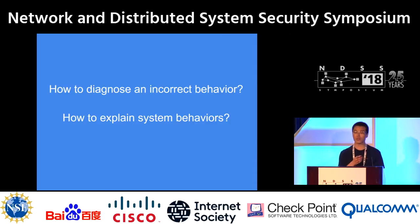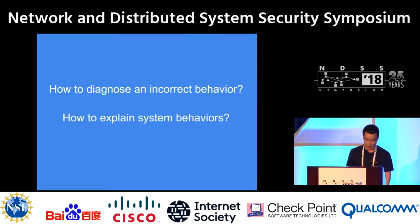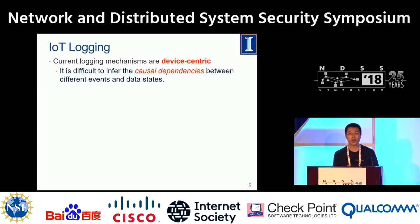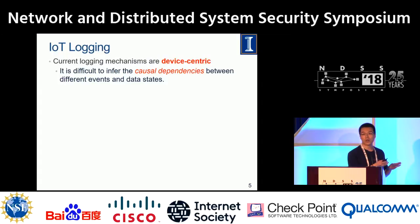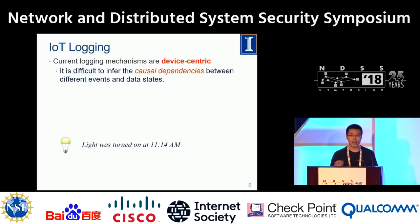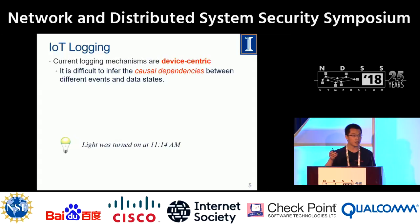A fundamental question is how to explain system behaviors. A simple approach is to look into the IoT logs. But the current IoT logging system is device-centric — the logs are in the devices themselves and only log what the devices do. For example, the light will turn on at 11:14 a.m., and you may wonder why the light turns on in the daytime.